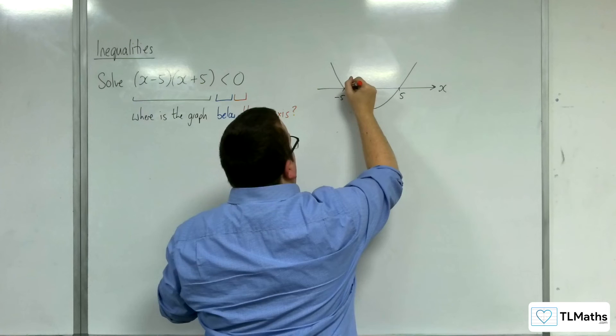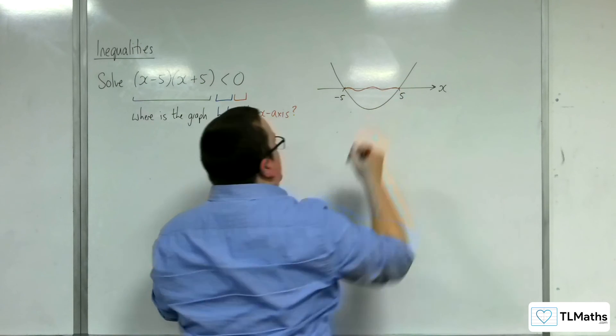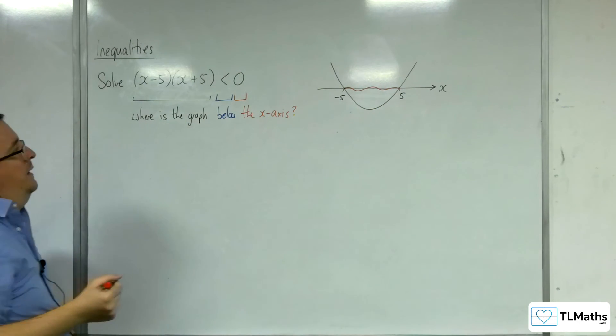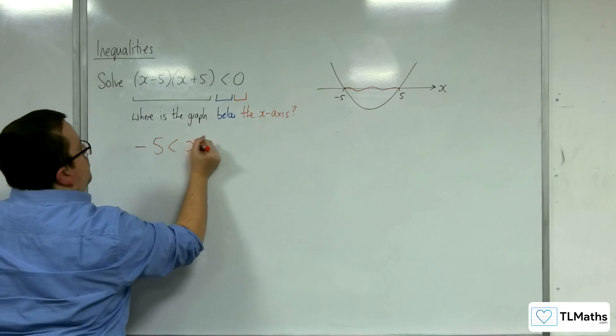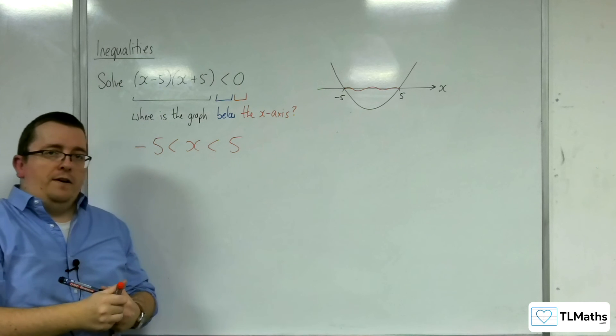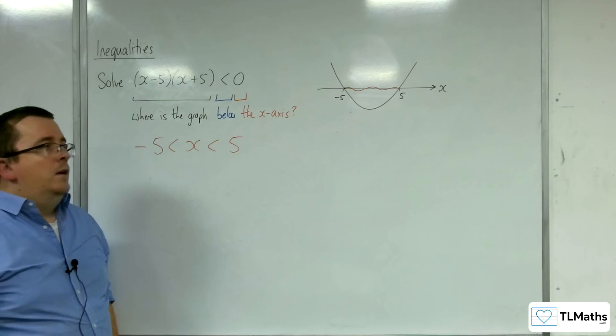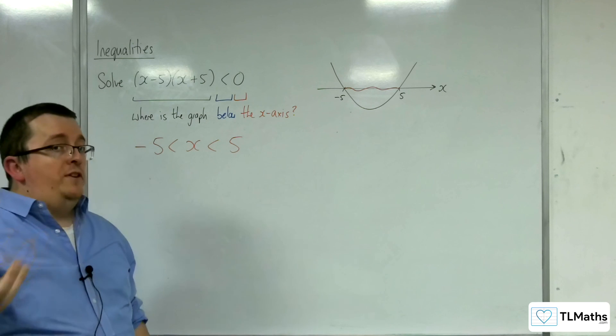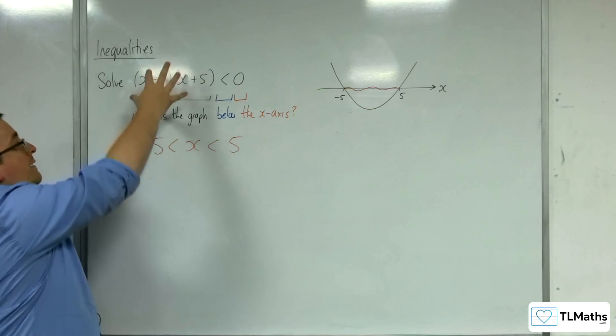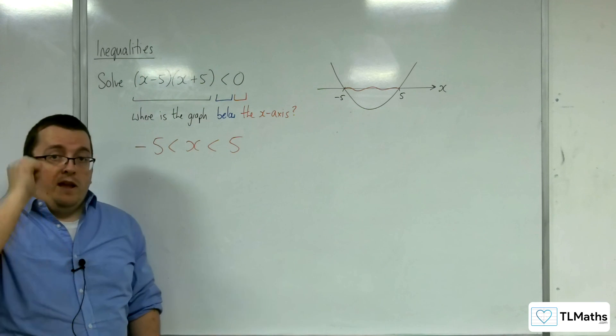It's below the x-axis between minus 5 and 5. And so, the solution to this inequality is x is greater than minus 5, but less than 5. And then, if you had to write your answer in set notation or interval notation, then you could. But that is directly the answer that we are looking for.